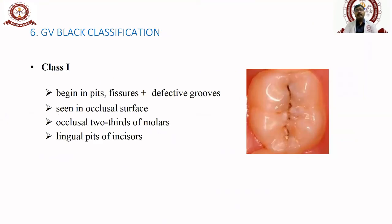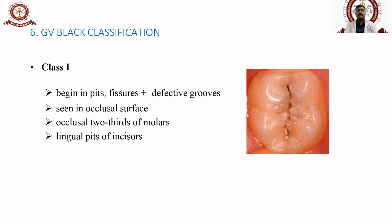G.V. Black's classification divides cavities into five types based on surface involvement. Class I is basically seen in pits and fissures and defective grooves, mainly on the occlusal surface of molars and premolars, occlusal-to-facial and lingual surfaces, and lingual pits of upper incisors. The first part involves the occlusal surface of molars and premolars with pits and fissures, and the second part involves the occlusal and buccal surfaces of lower molars and upper molars.